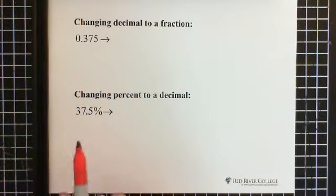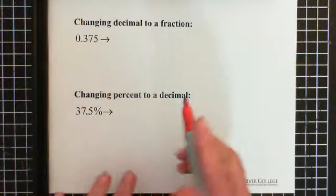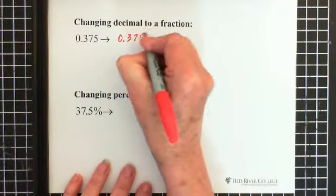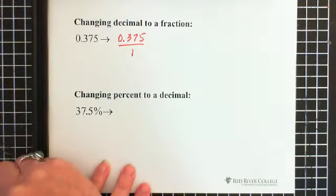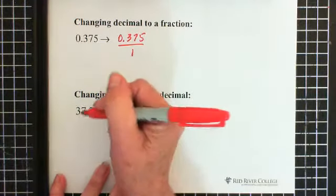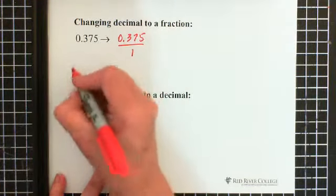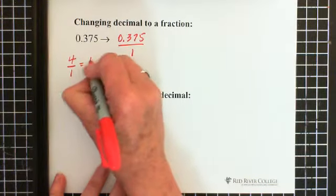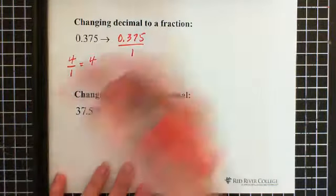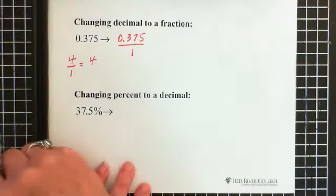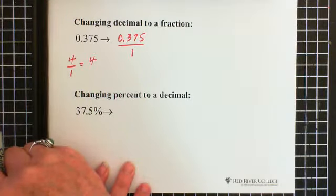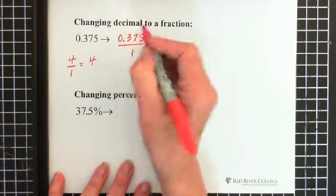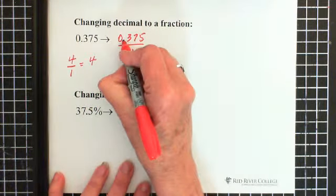Now if we want to change a decimal to a fraction, that's the thing that takes a little more work. So we start with 0.375. The first thing we do is divide it by 1. The reason we do that, we can take the number 4. If we have 4 divided by 1, it still equals 4. So we haven't actually changed this number by dividing it by 1. Then what we do is on the top, we move the decimal all the places it has to be moved in order to get rid of the decimal. So in this case, we have to move it 1, 2, 3 places to the right.